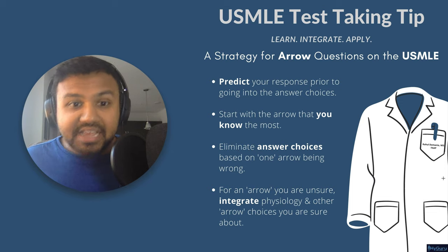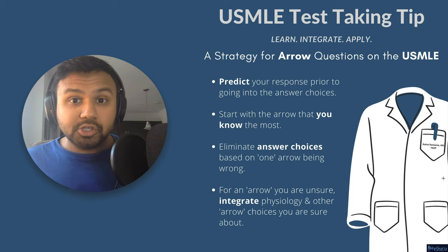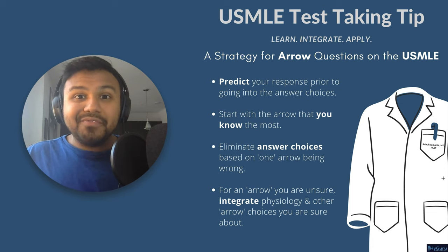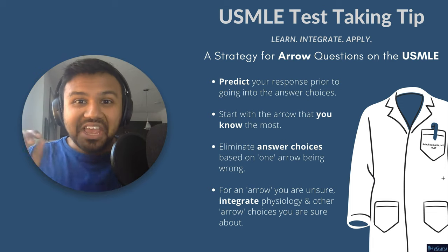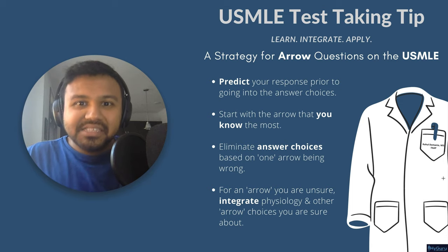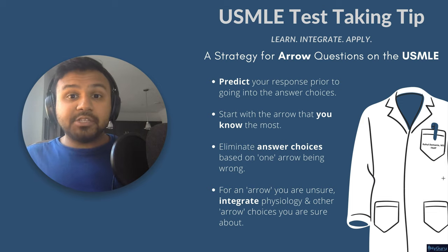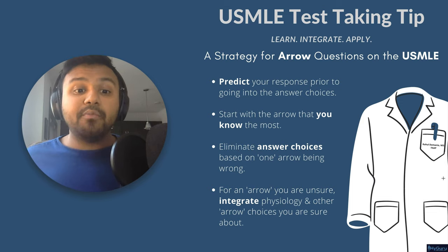The first step is to predict your response prior to going into your answer choices. As you can see on many of these questions, there's just going to be a sea of arrows in the answer choices. So before you attack A, B, C, D, think in your mind: what do you expect to go up? What do you expect to go down? Prediction is going to be very helpful.